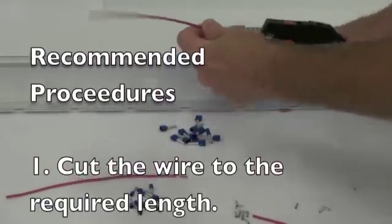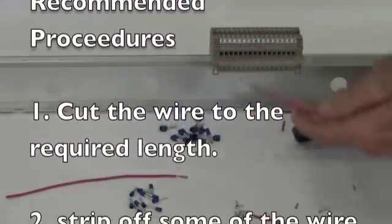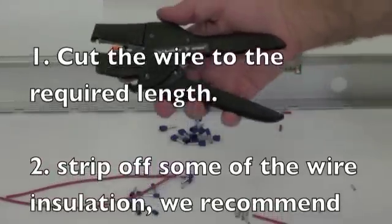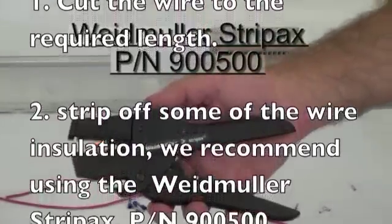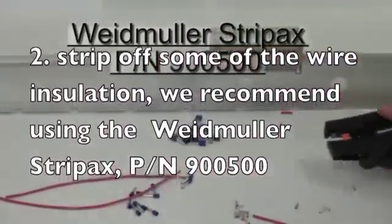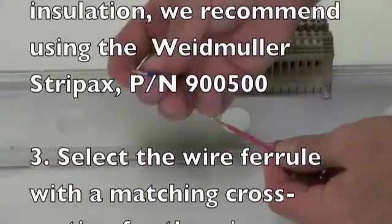Cut the wire to the required length. Strip off some of the wire insulation. The tool I am using here is the Weidmuller Stripex, part number 900500.